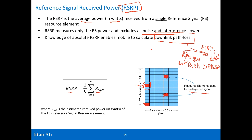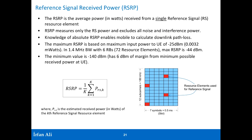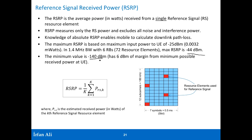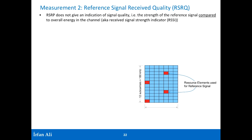The RSRP values range from minus 44 dBm to minus 140 dBm — that is decibels relative to one milliwatt. That is the full range of RSRP for your reference.